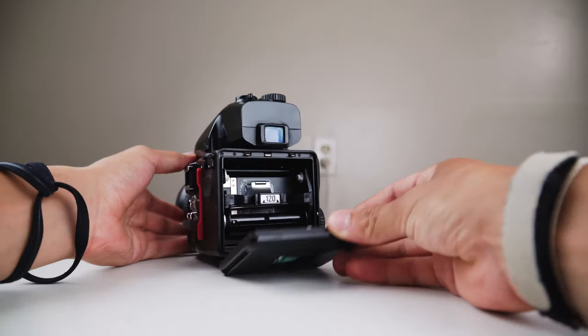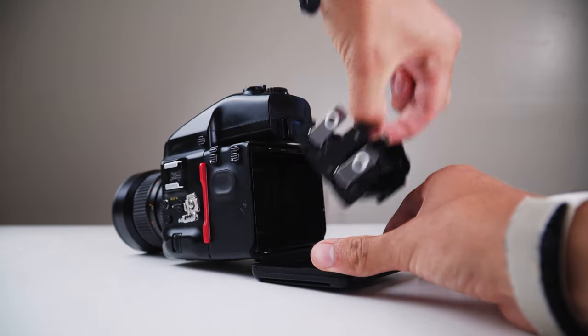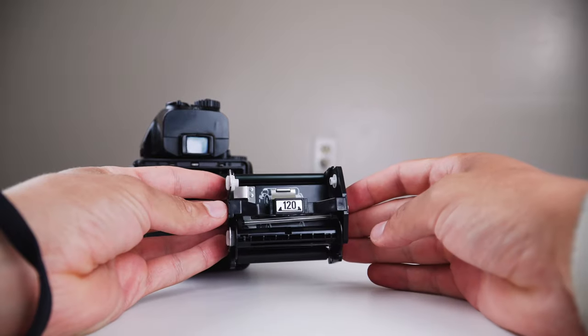Next, you're going to want to take out the film spools. Use two fingers to pinch the middle of the spool apparatus, and it should come right out. Give it a quick inspection, and you should be good to go.